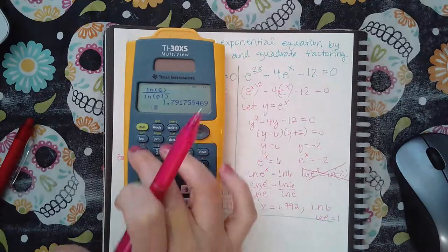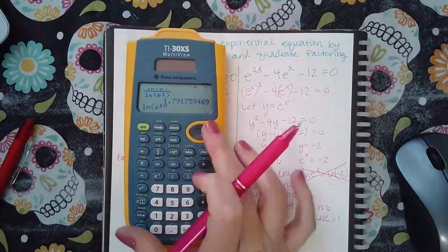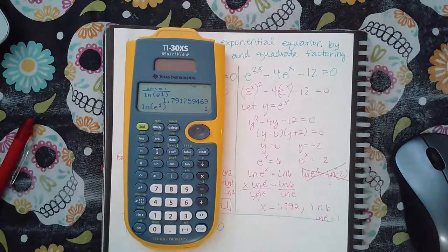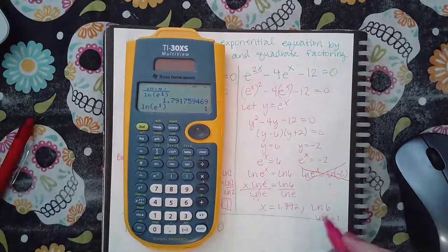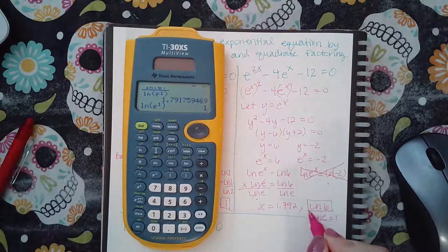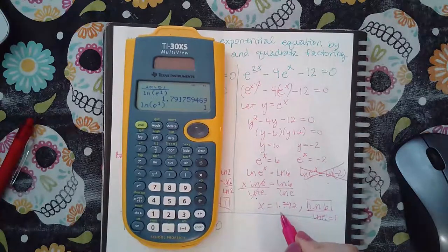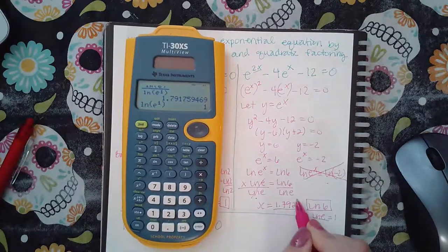And if you don't believe me, you can always do ln of e to the 1 all by itself. And it is the value 1. So if it wants the exact answer, give them this. If it'll accept the rounded answer, give them this.